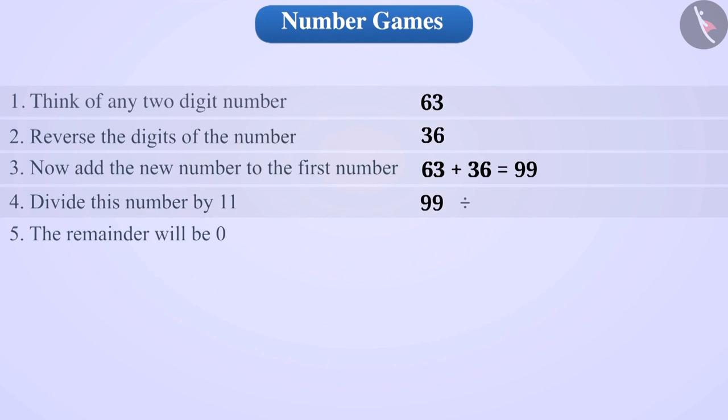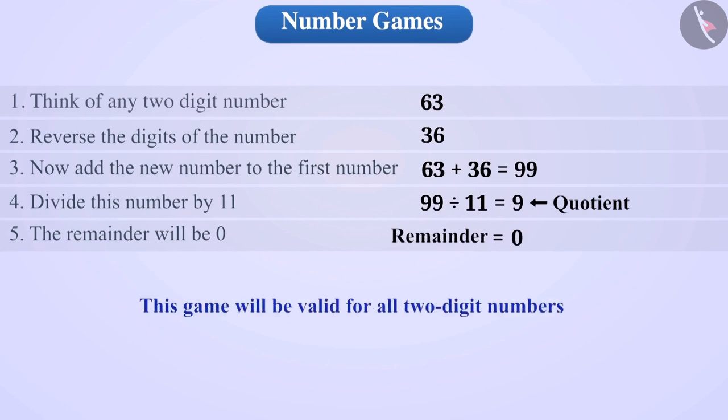Now, dividing the number 99 by 11, we get the quotient 9 and remainder 0. Similarly, this game will be valid for all two-digit numbers.